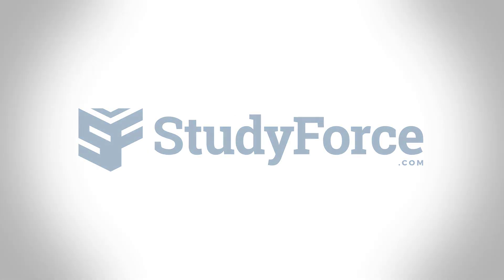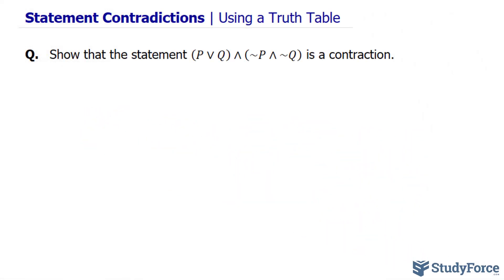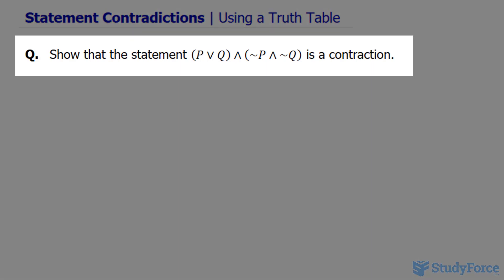In this lesson, I'll show you how to use a truth table to show that a statement is a contradiction. When learning proofs and logic, a contradiction or contradictory statement is never true under any circumstance. So let's show that this statement is a contradiction.